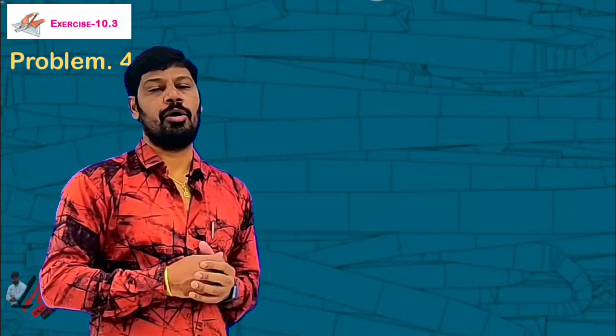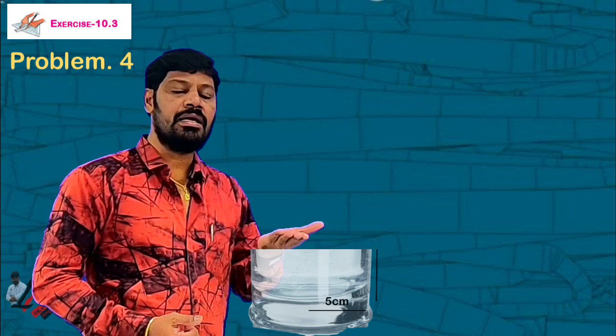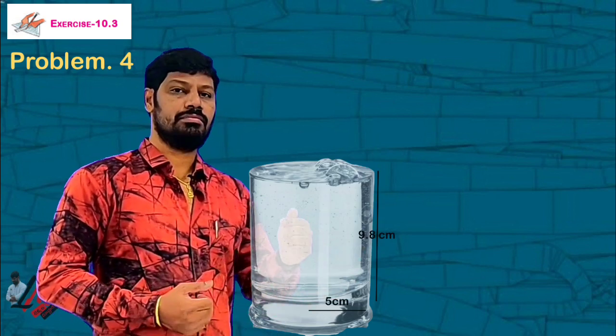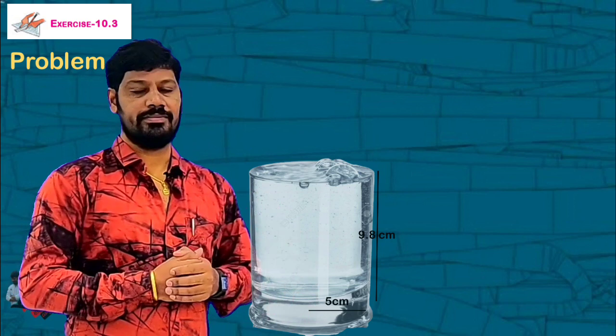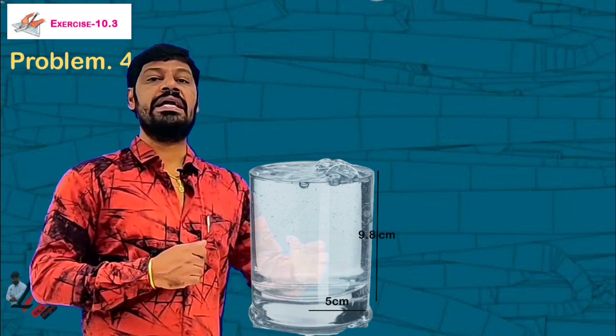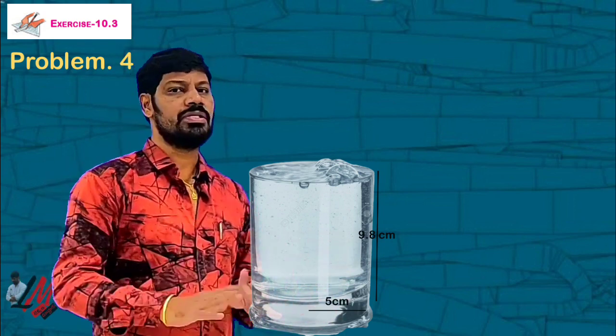Now coming to the problem. What is clear? 5 cm radius, 9.8 cm height is a cylindrical tube. It is full of water. So here in the distance, the radius is equal to the height is equal to the volume of stone, surface area, or anything.